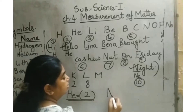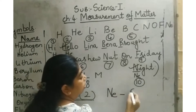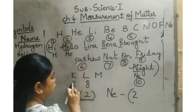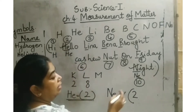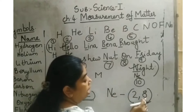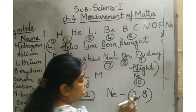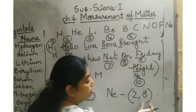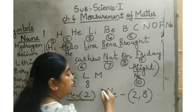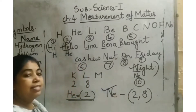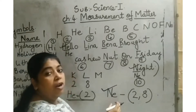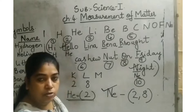Another example is neon. In the first K-shell we always have 2 electrons. Neon has atomic number 10, and 10 minus 2 is 8, so 8 electrons come in the next shell — the L-shell. There are 8 electrons in the outermost orbit of neon, so neon is also considered a stable or zero group element, also called an inert gas.